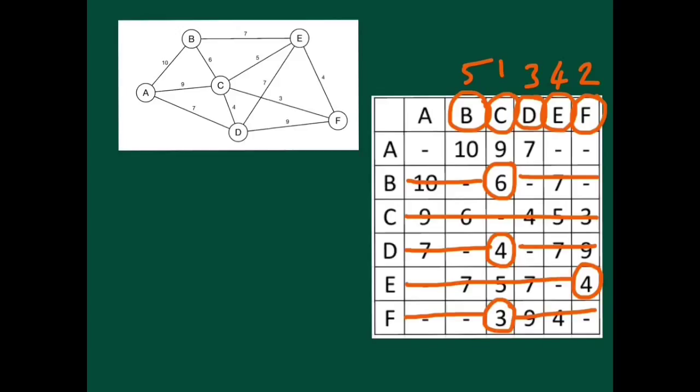And I'm now looking under columns B, C, D, E and F to find the minimum undeleted one, that's this 7 here, so I cross that out which is in A, circle A, number 6, and we're done.